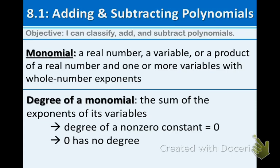Before we talk about what a polynomial is, let's talk about what a monomial is. Take a moment and write down this definition. A monomial is a real number, a variable, or a product of a real number and one or more variables with whole number exponents.